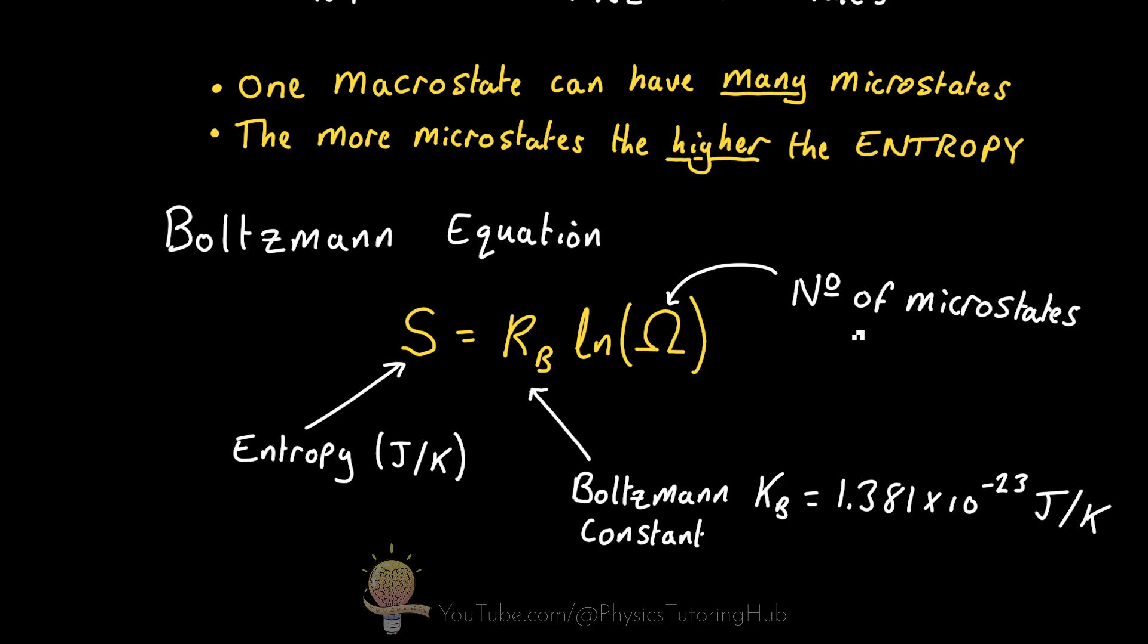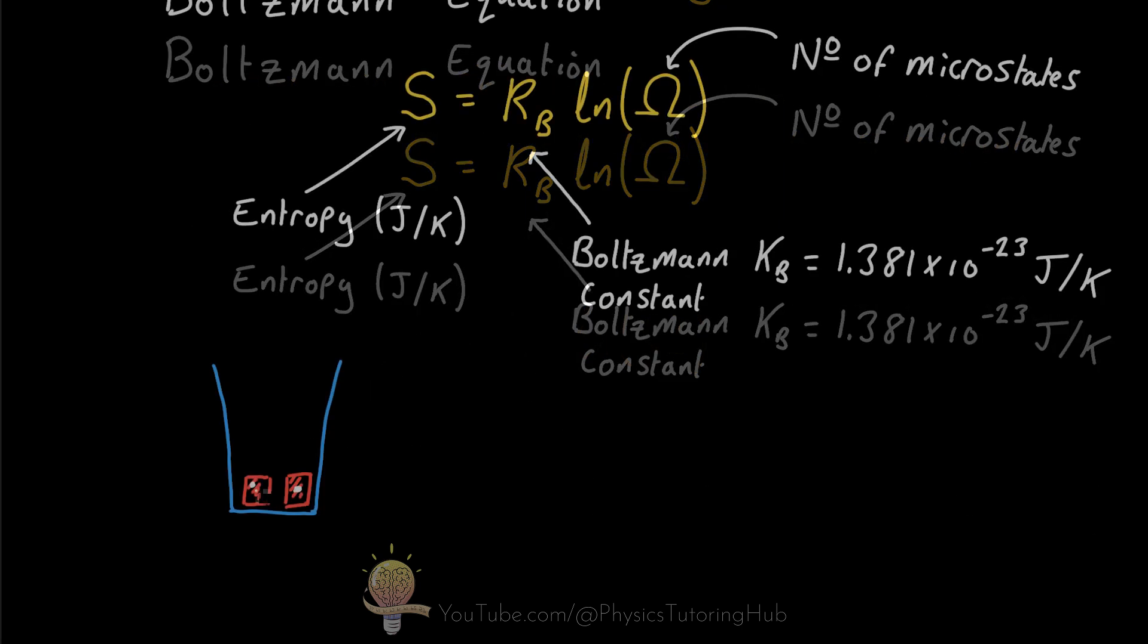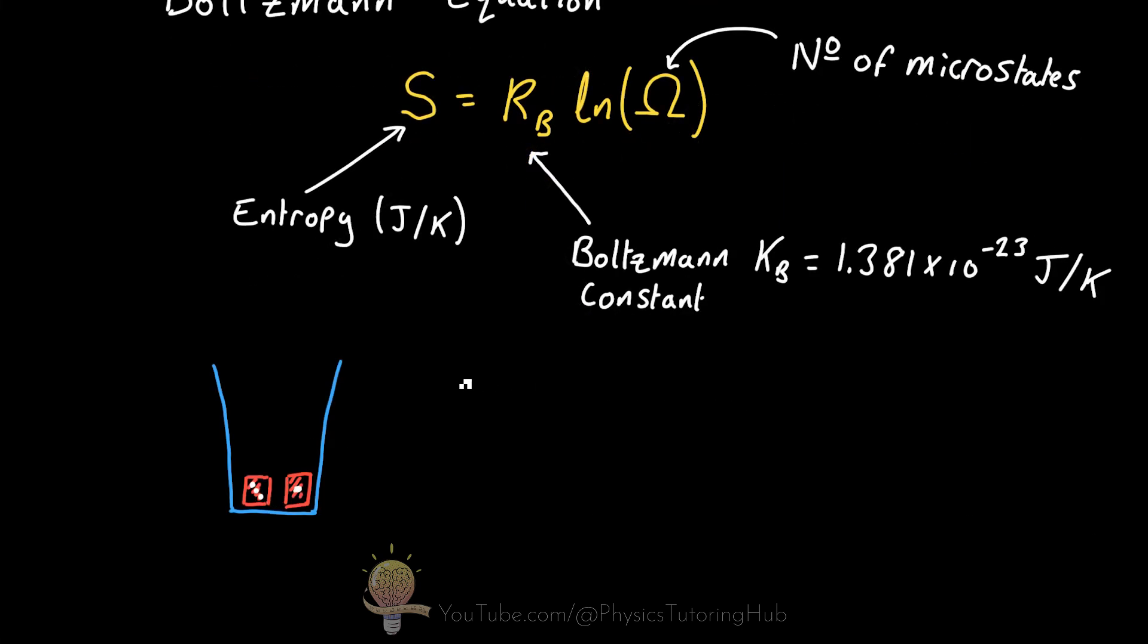So to understand macrostates and microstates a bit more intuitively, let's imagine we have two six-sided dice and we shake the dice within a glass or a cup. Now, in this context, the microstate represents a specific arrangement of the dice when we stop shaking this glass and we see what values we get on top of the dice. For example, on one of the dice, we could have a value of one and the other could have a value of three. This would represent a single microstate.